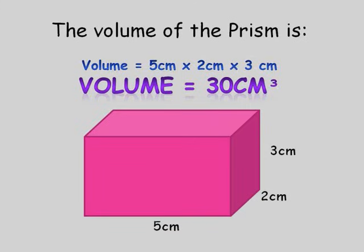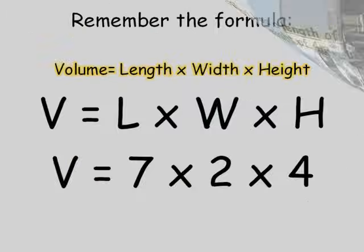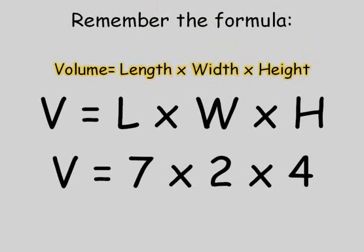Now that you know the formula, let's have a go at doing the next problem. A truck has a trailer that has a length of 7 metres, a width of 2 metres, and a height of 4 metres. What is the volume of the trailer? Make sure you remember the formula: volume equals length times width times height. So, the volume of our trailer is 7 times 2 times 4. Pause the podcast here. You may wish to do this problem individually, in pairs, or as a class.